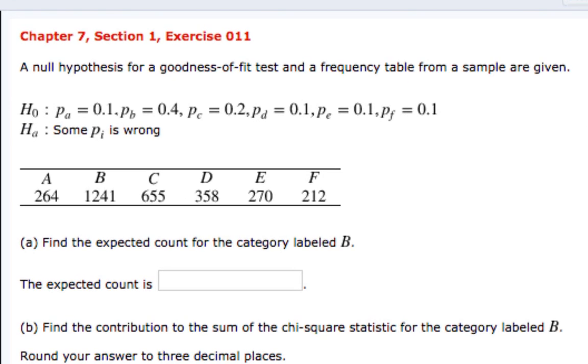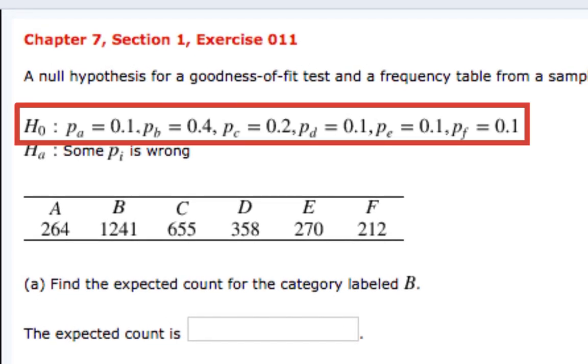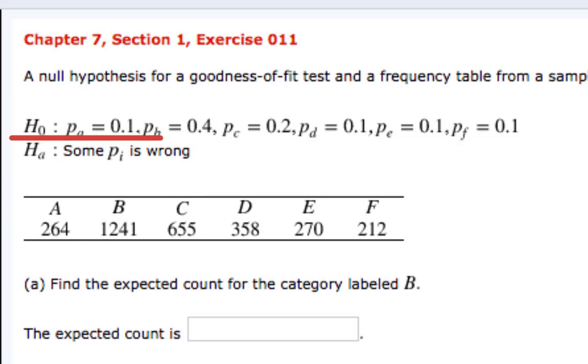A null hypothesis for a Goodness-of-Fit test and a frequency table from a sample are given. Here we have our null hypothesis that the population proportion for A is 0.1, for B is 0.4, for C is 0.2, for D 0.1, E 0.1, and F 0.1. Our alternative hypothesis then is that at least one of these p sub i's is wrong.